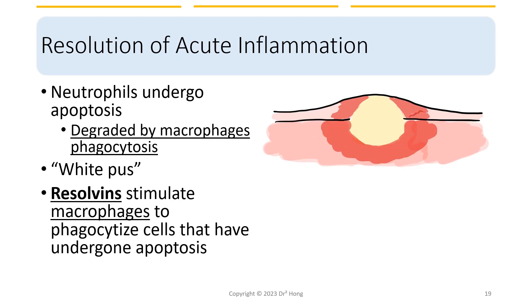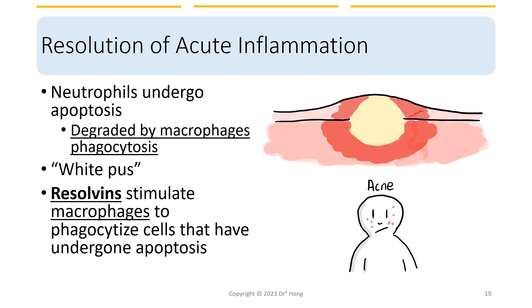At the end of acute inflammation, after neutrophils finish the phagocytosis process, they undergo apoptosis. After apoptosis, these dead neutrophils are degraded or cleared by macrophages through phagocytosis. What's left behind are some white parts, which are often associated with inflamed acne. What makes macrophages know it's time to clean up is an omega-3-related molecule called resolvins. Resolvins stimulate macrophages to eat more of the cells that have undergone apoptosis, signaling the end stage of acute inflammation. In other words, resolvins is an anti-inflammatory mediator.